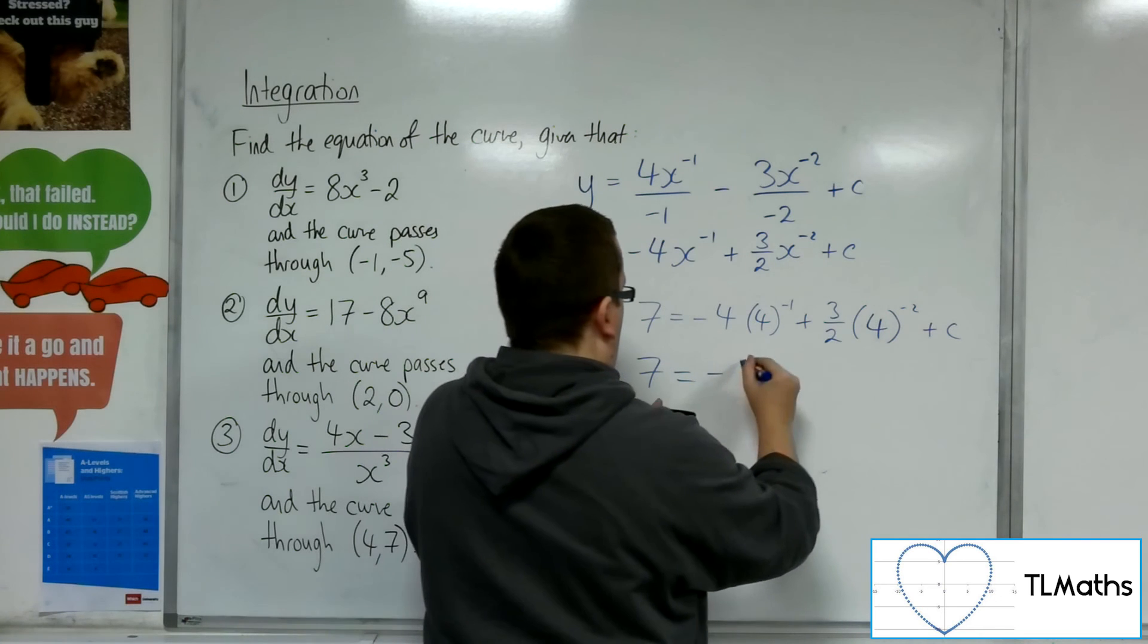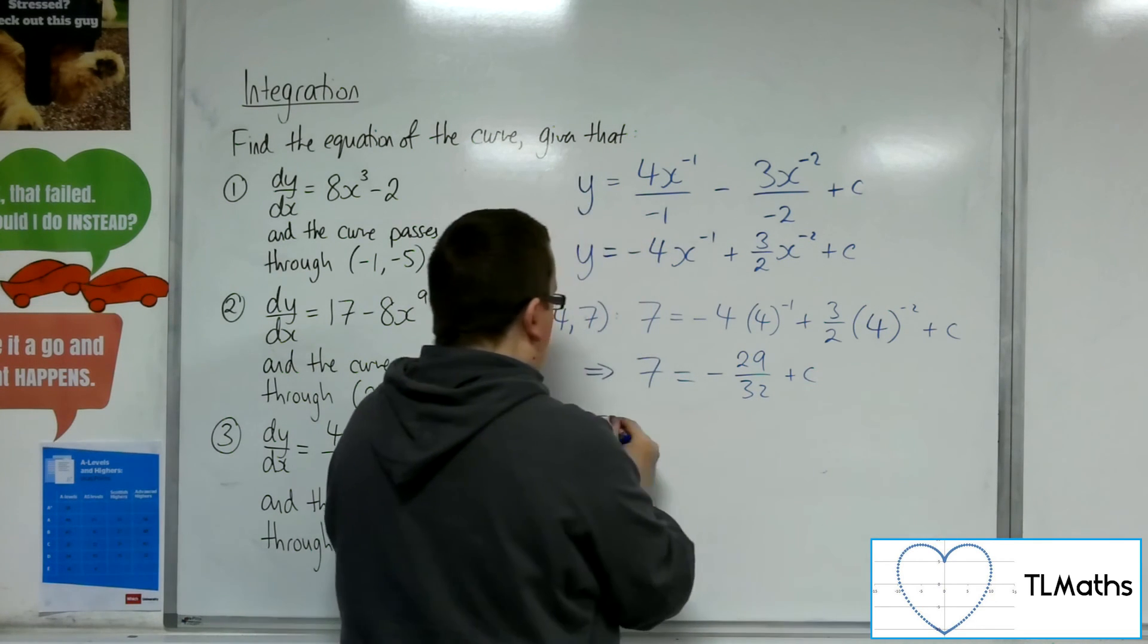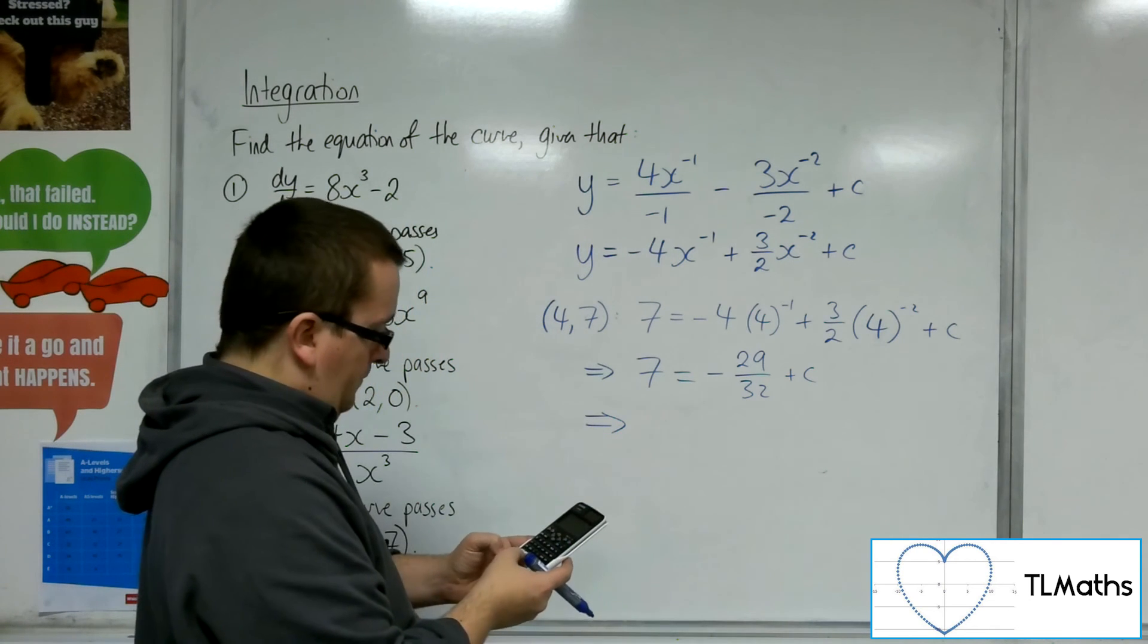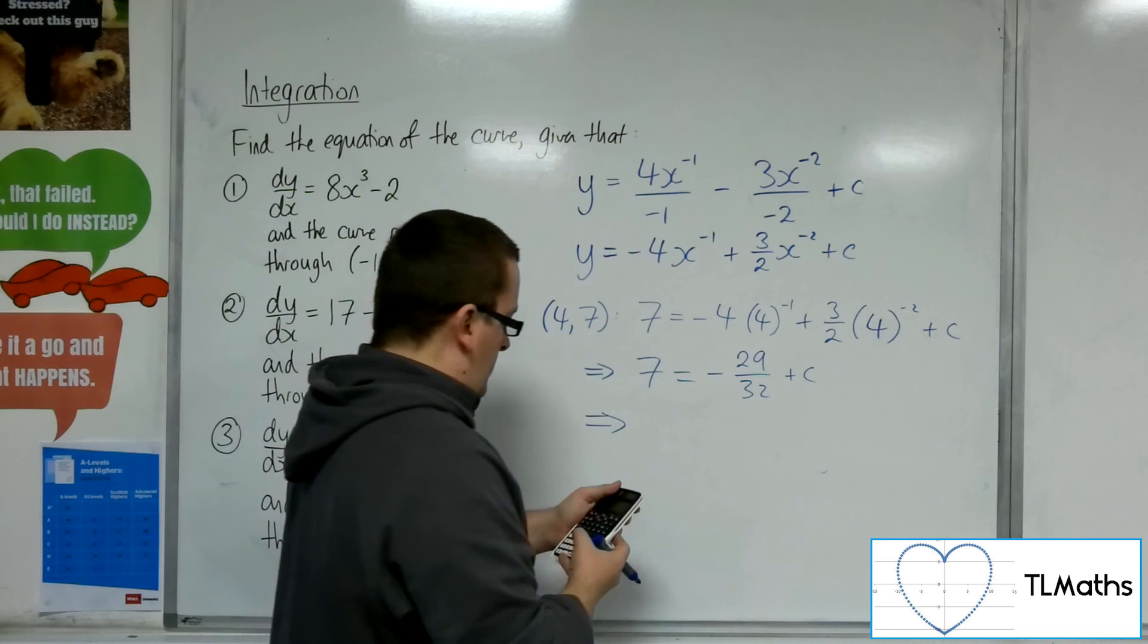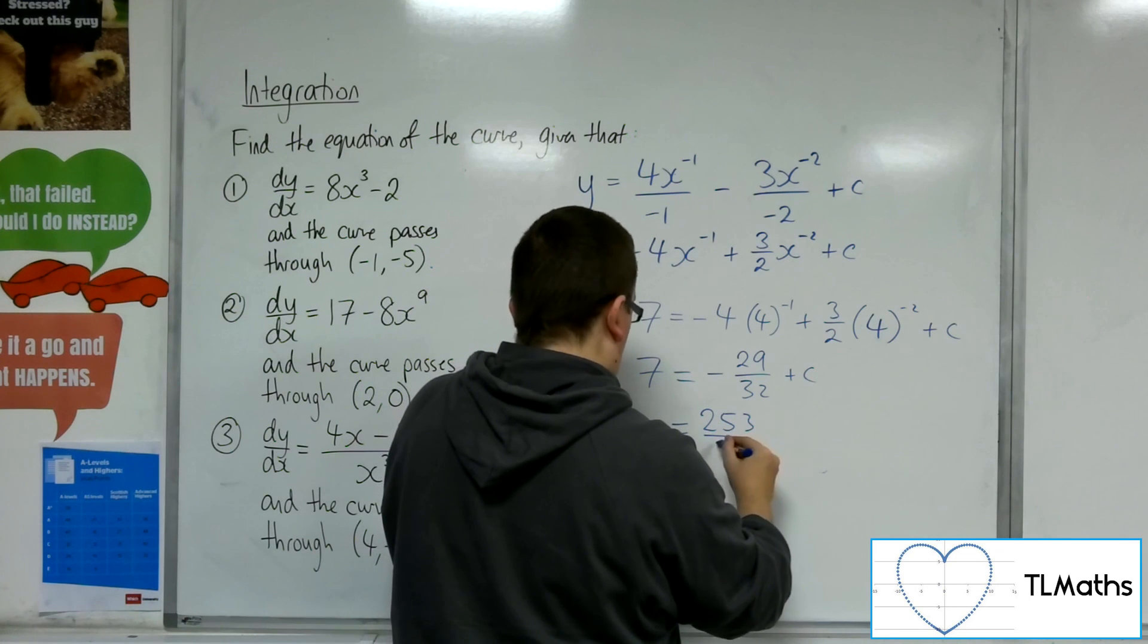equal to -29/32. So if I add 29/32 to both sides, c is 253/32.